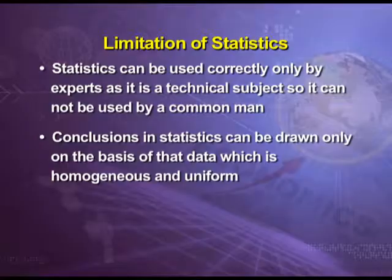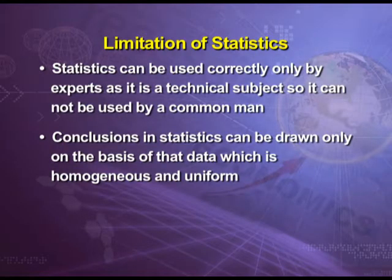Its next limitation is that conclusions in statistics can be drawn only on the basis of data which is homogeneous and uniform. For example, if we have to obtain average marks of students, then all students should be of the same stream or same class — all must be of eleventh class, and all must be of commerce, science, or arts — otherwise the conclusion will be wrong.